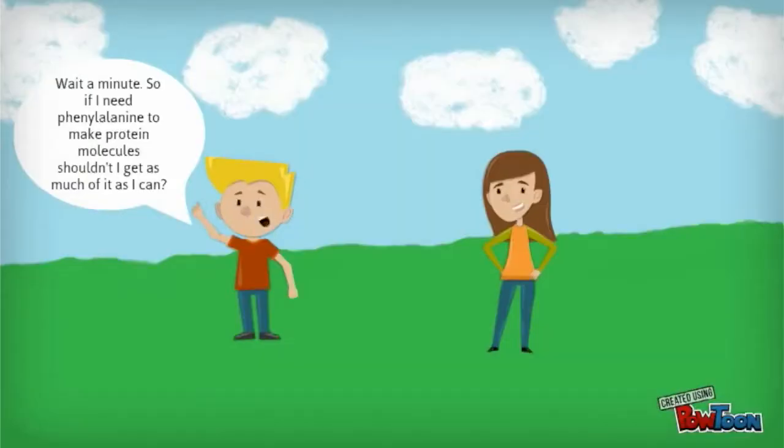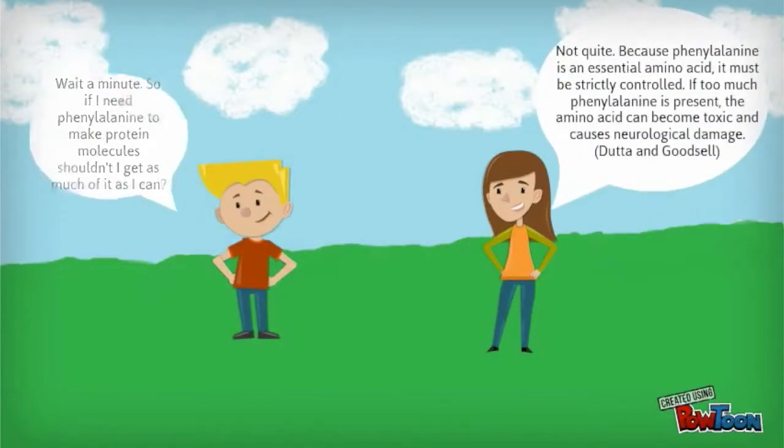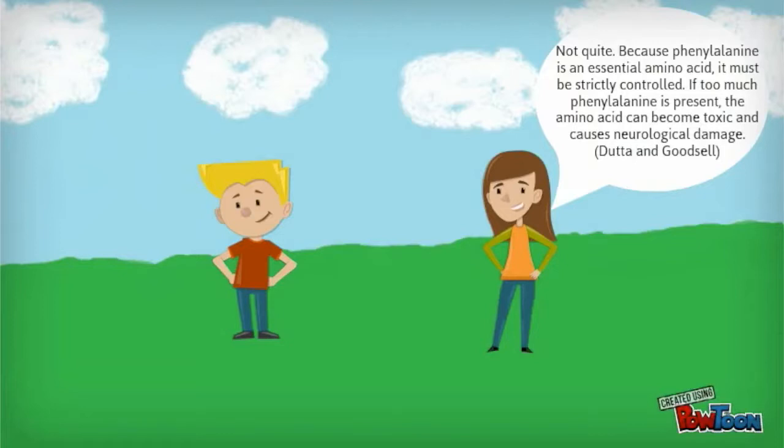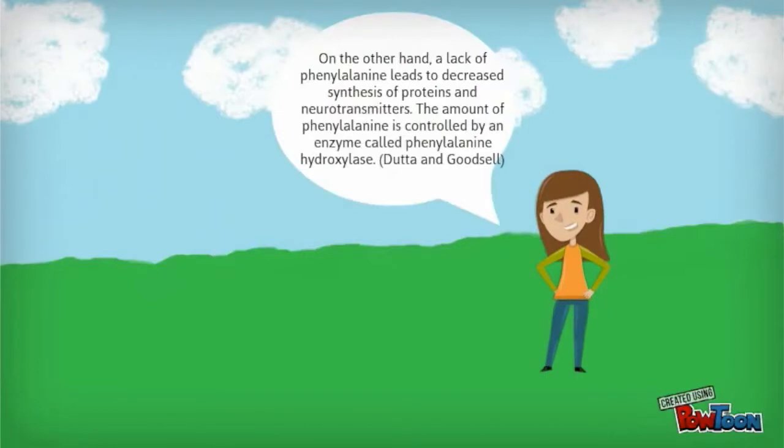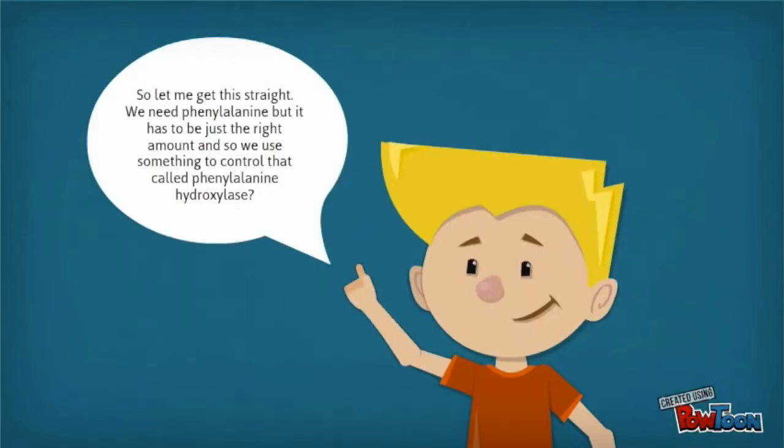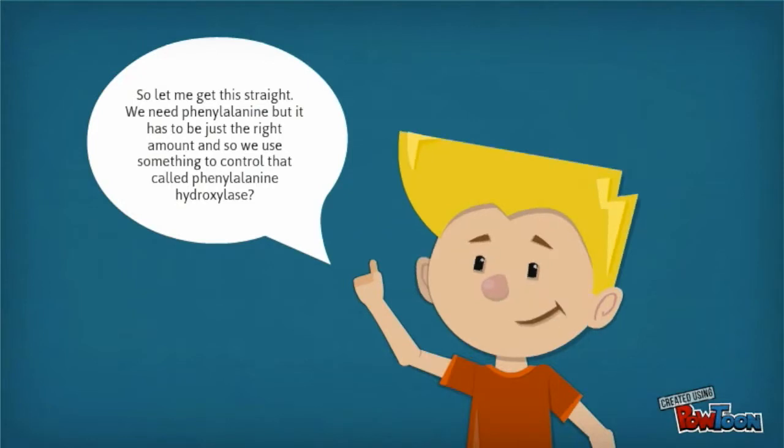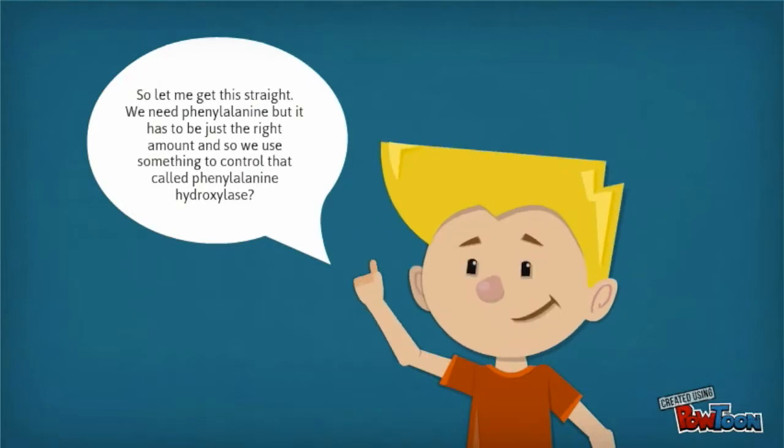Wait a minute. So if I need phenylalanine to make protein molecules, shouldn't I get as much of it as I can? Not quite. Because phenylalanine is an essential amino acid, it must be strictly controlled. If too much phenylalanine is present, the amino acid can become toxic and causes neurological damage. On the other hand, a lack of phenylalanine leads to decreased synthesis of proteins and neurotransmitters. The amount of phenylalanine is controlled by an enzyme called phenylalanine hydroxylase. So let me get this straight. We need phenylalanine, but it has to be just the right amount, and so we use something to control that called phenylalanine hydroxylase?